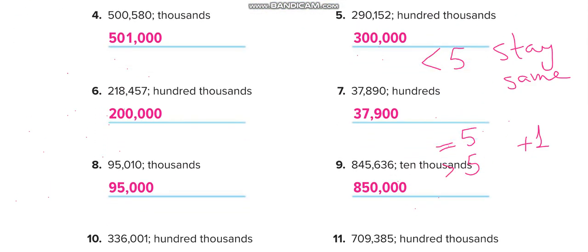Here is the first one. They give us the number 500,580 and ask us to round to the nearest thousand. One, tens, hundreds, thousands — we will circle thousands. We check the next digit, which is 5. Since it is equal to 5, we add one: 0 plus 1 equals 1. So we get 501,000, with remaining digits all zeros.